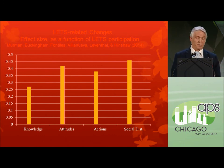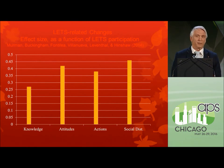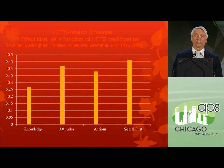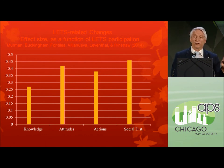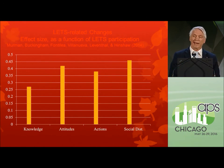Attitudes toward gay marriage have changed radically in the United States in the last 20 years, mainly because of people under 30. People my age are not the solution for mental illness stigma. It's going to be young people turning on their natural empathy and activism that we think might make a big difference.